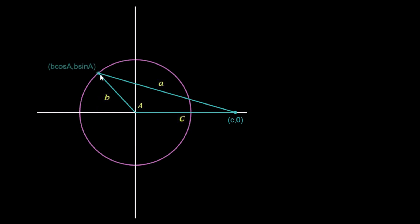This point here is going to be given by the x-coordinate b cos A. You'll have seen this from your previous videos on trigonometry, so convince yourself that the x-coordinate is given by b cos A and the y-coordinate is given by b sin A, where A is this large angle.